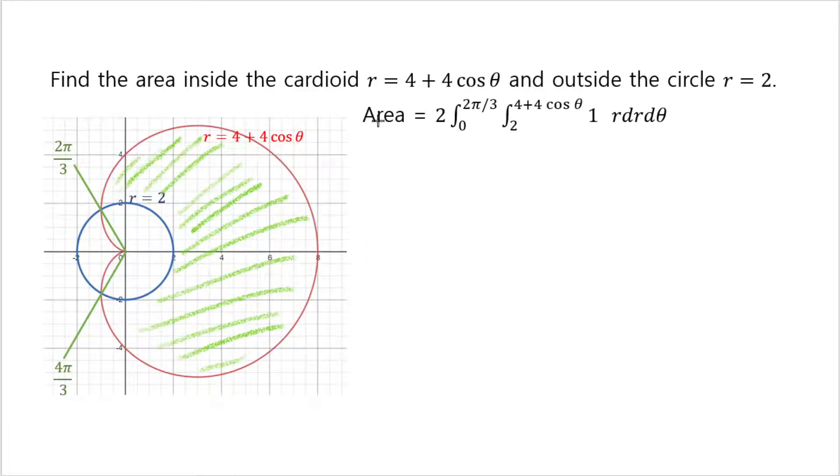So we're going to say the area is 2 times, remember, r dr d theta is the area element for polar coordinate system. dA is r dr d theta. To get the area, you just integrate 1 over this area. The angle goes from 0 to 2 pi over 3, so d theta goes from 0 to 2 pi over 3.